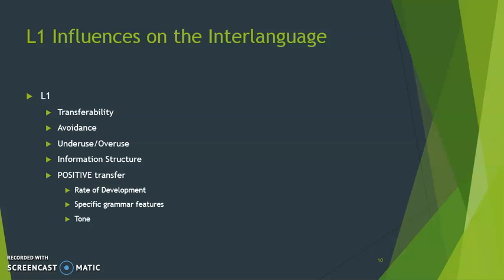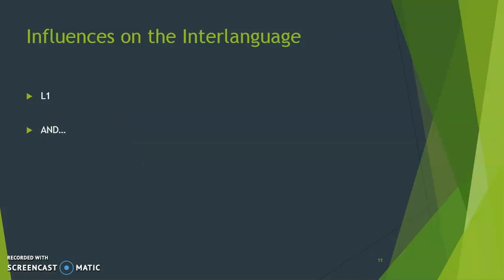This doesn't mean L1 makes all L2 learning easy — it might just speed up the rate of development. When thinking about influences on interlanguage, L1 is certainly our first suspect. But if L1 explained everything, that would be the key to making L2 development easy — English speakers learning Spanish should all be very successful. We know language learning is more complex, so we'll think about other factors beyond L1 that influence the interlanguage.